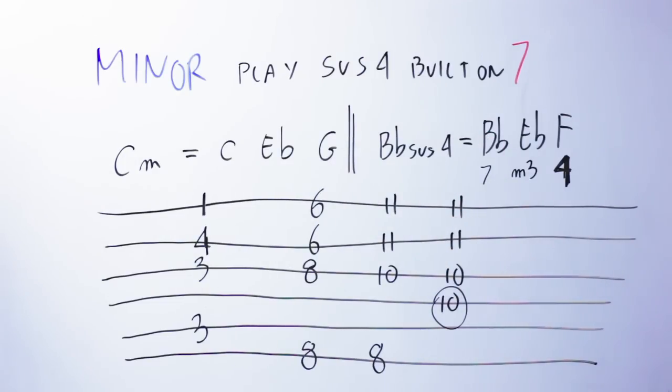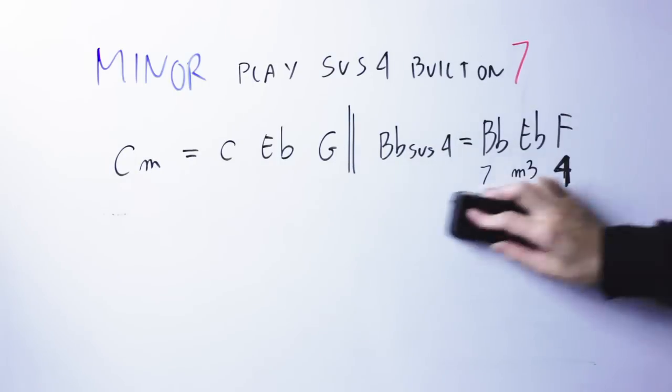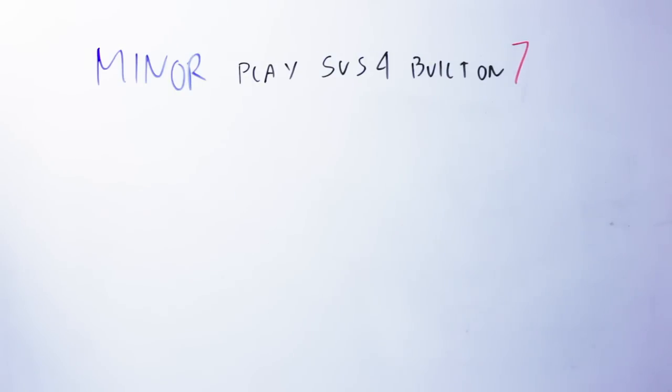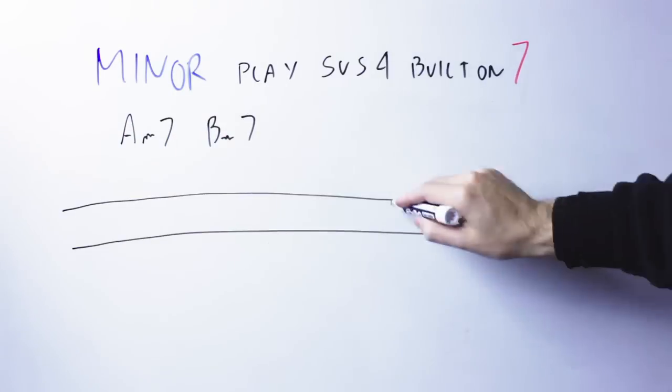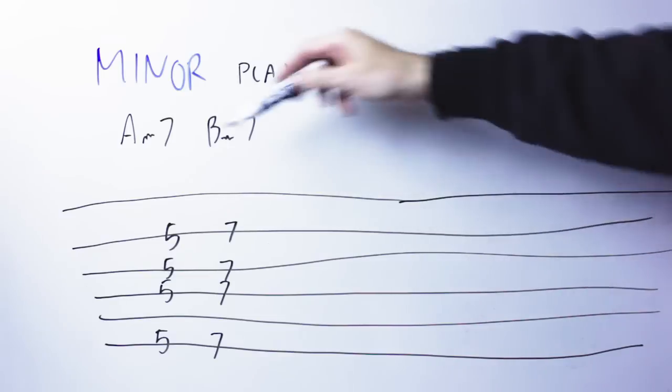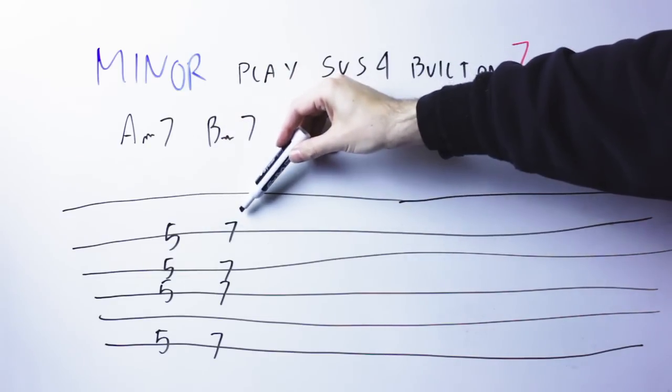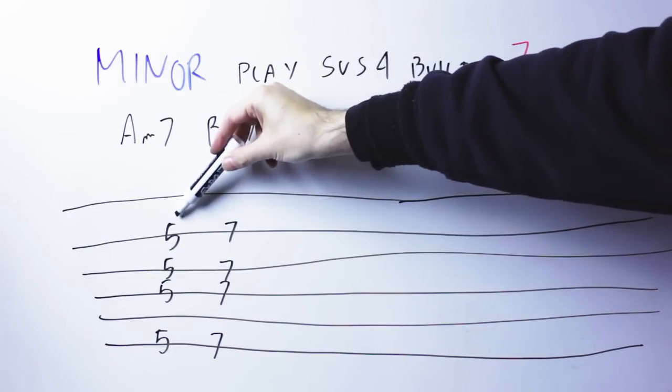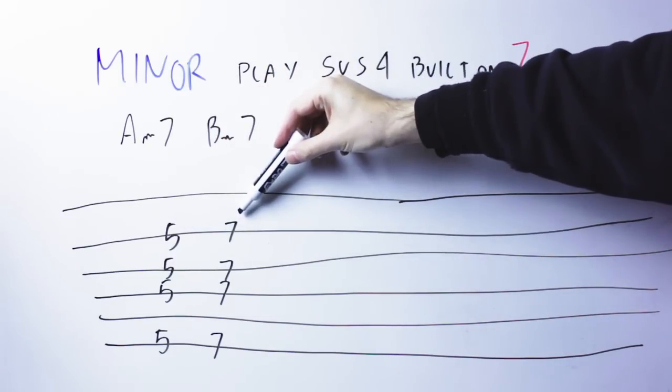So, if I take, now, a typical jazzy chord progression. A typical thing in jazz is if you play, for instance, A minor 7, B minor 7, so two minor 7 chords that move two frets apart. And it will sound this way.